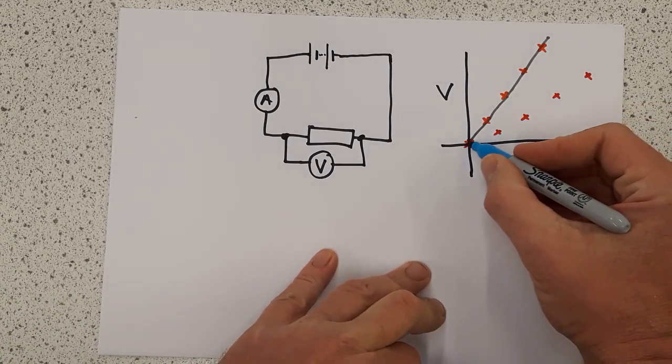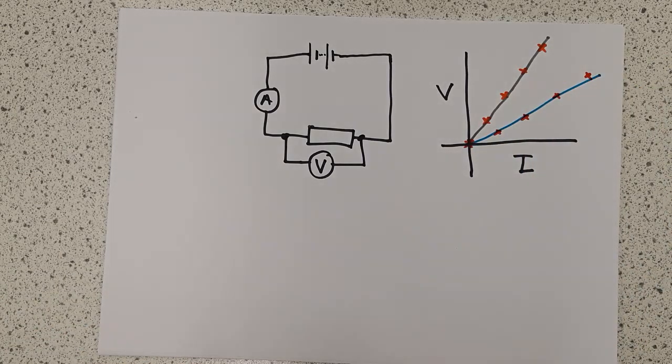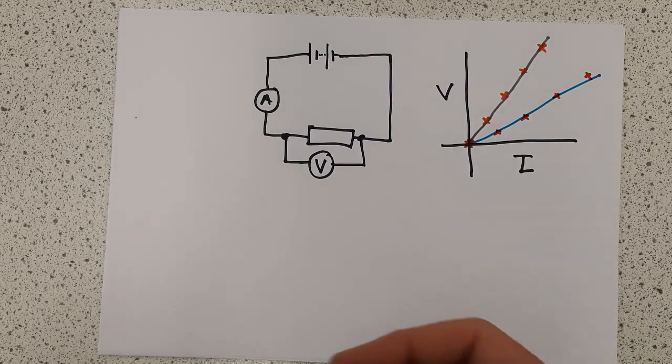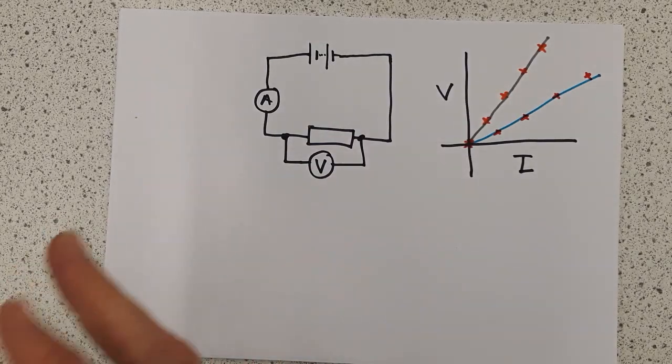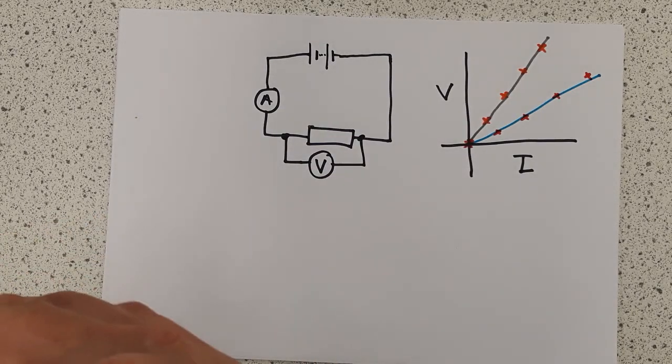So I have two graph lines here. Both of them are straight line graphs, despite my dodgy drawing. But they're different gradients. Now the gradient depends upon the resistance. And this is how resistance was first defined.